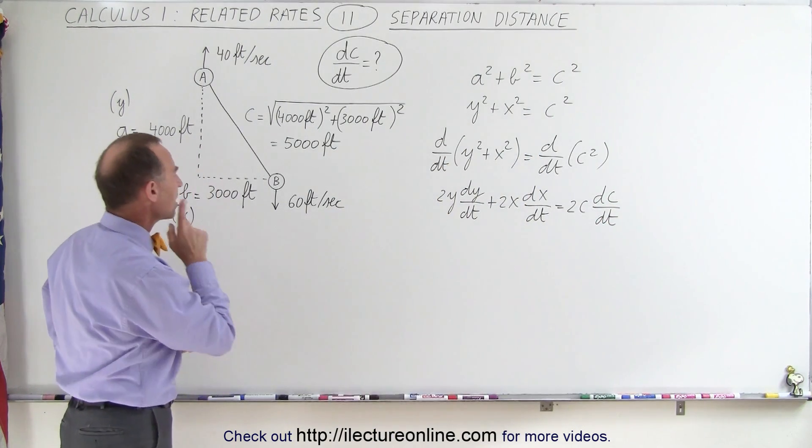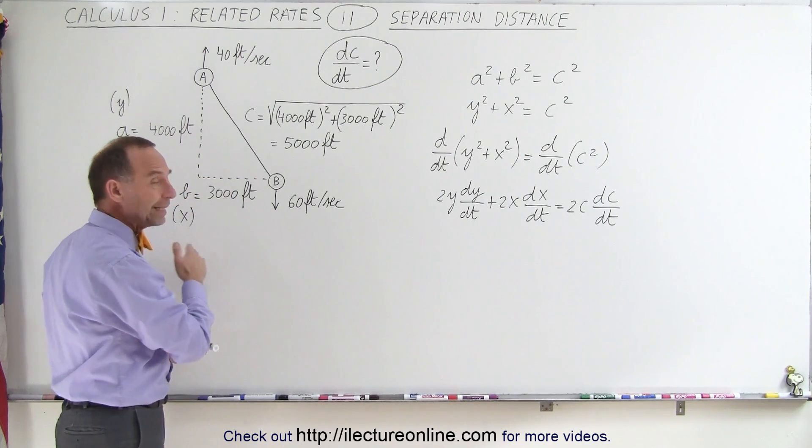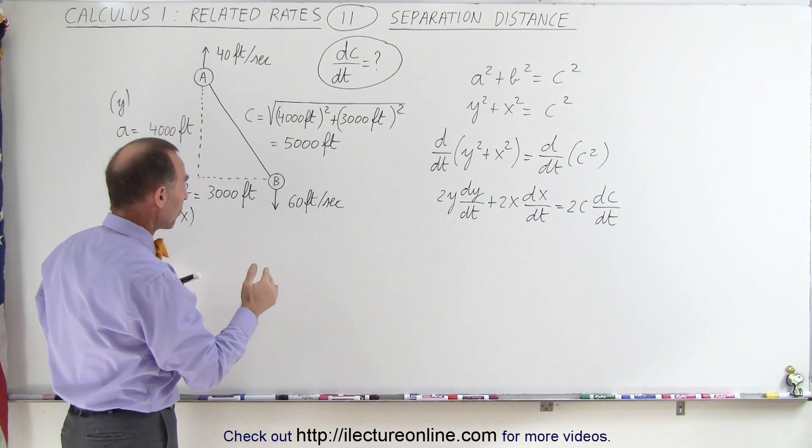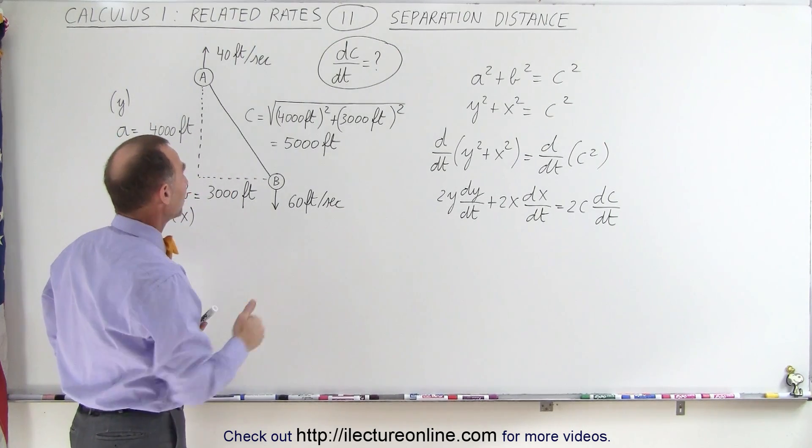So this gives us 2Y dy/dt plus 2X dx/dt is equal to 2C times dC/dt. So right away, we can see here that there's no movement in the horizontal direction or the X direction. That means that dx/dt must be equal to 0.